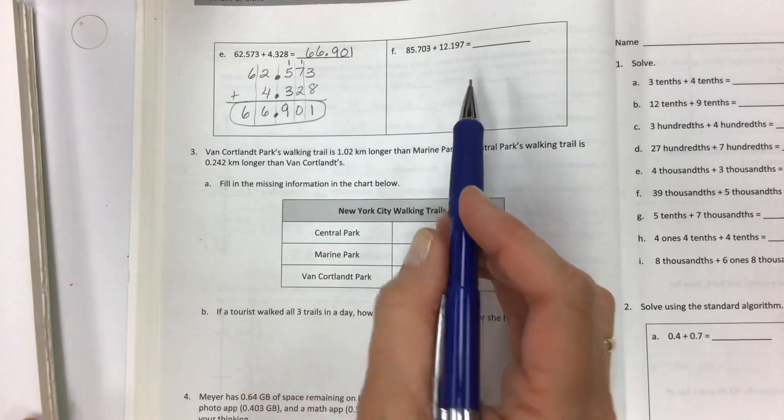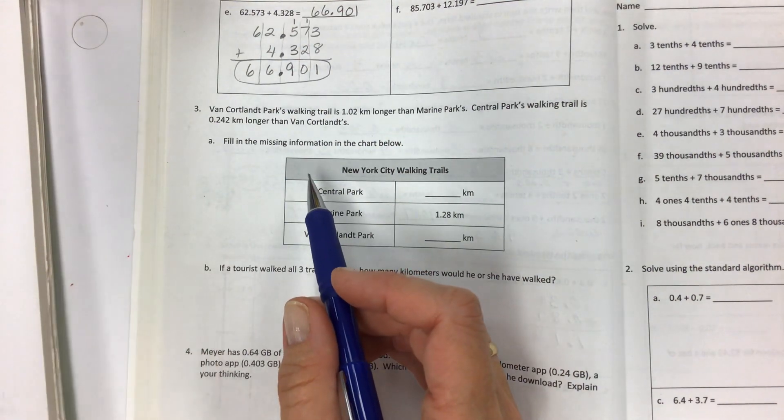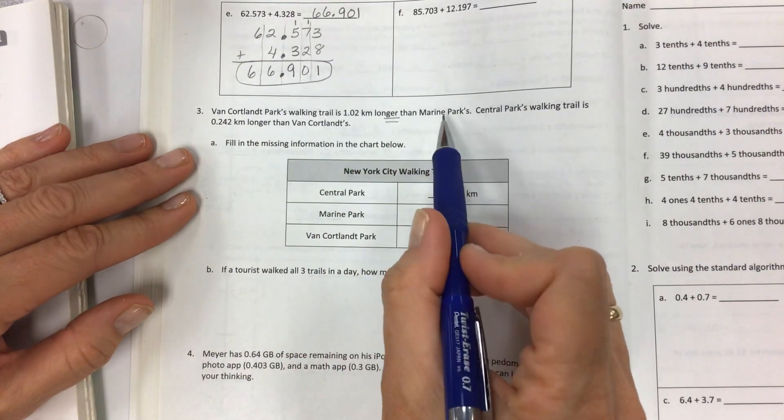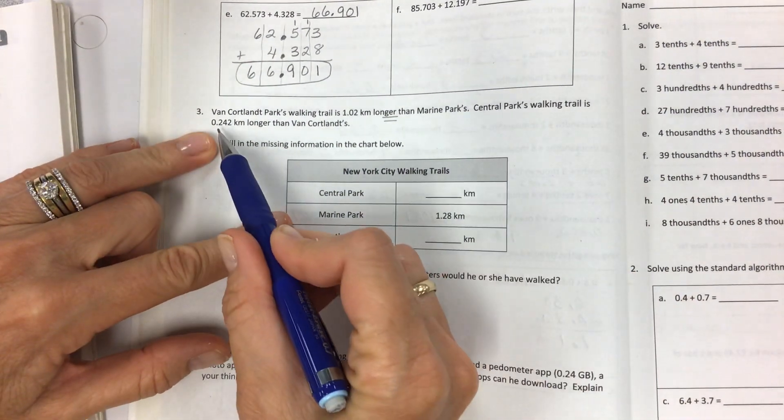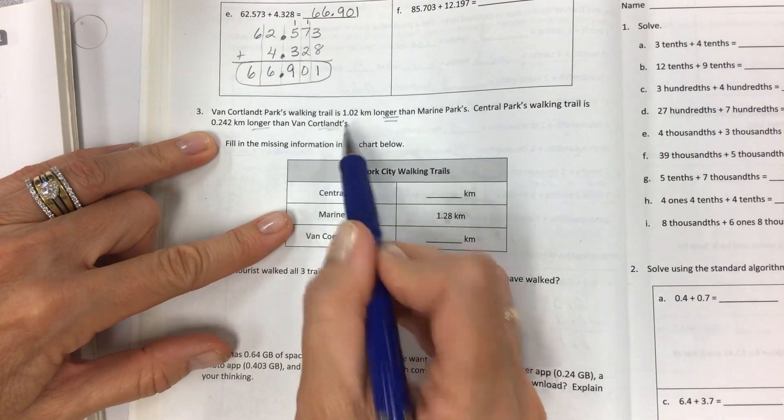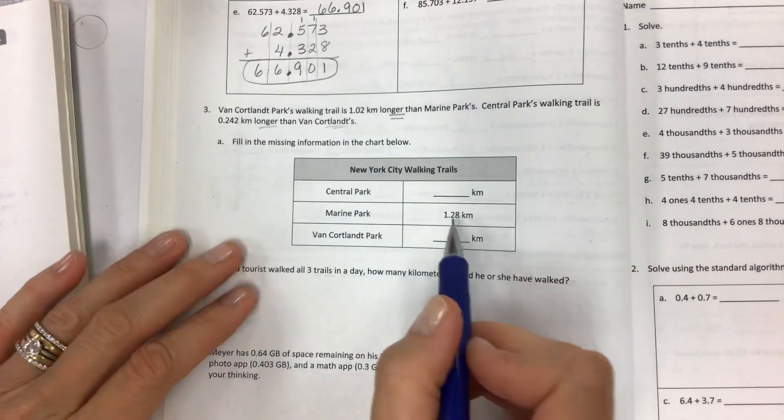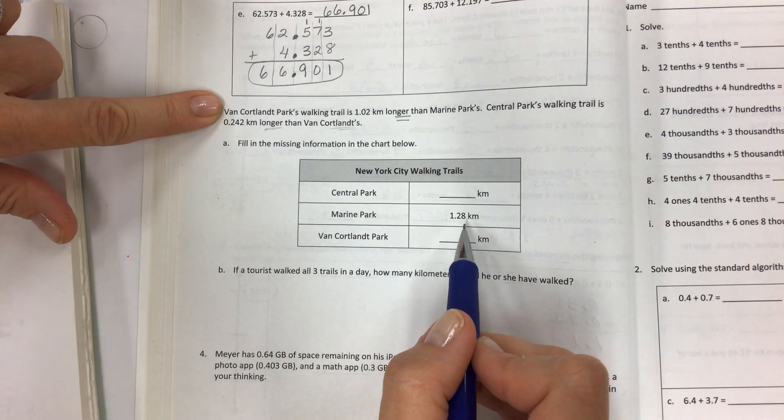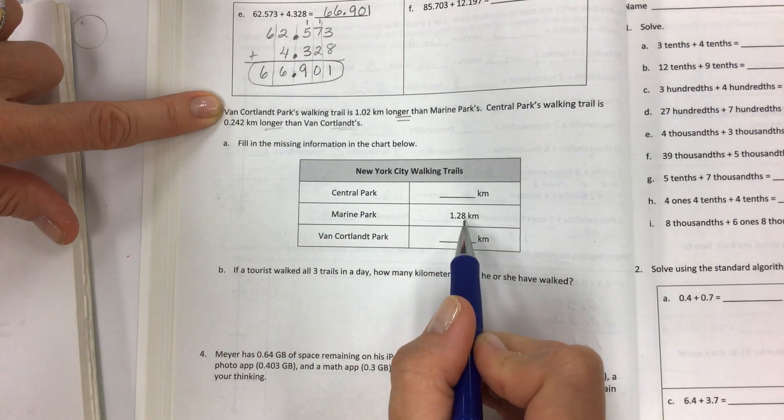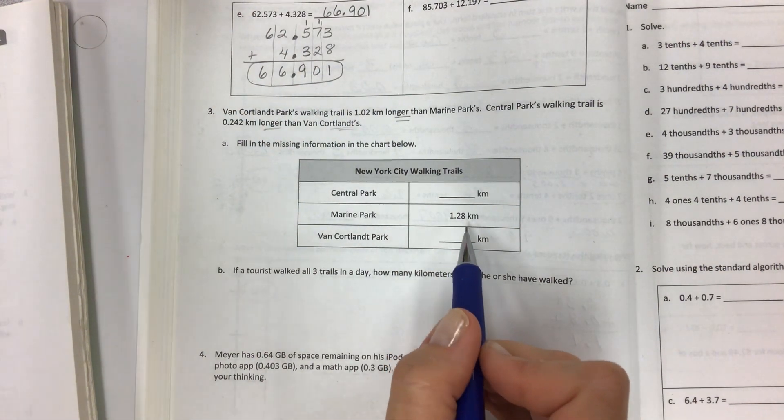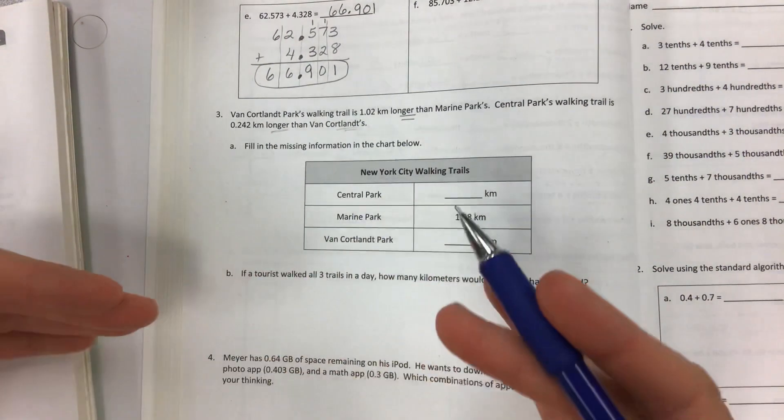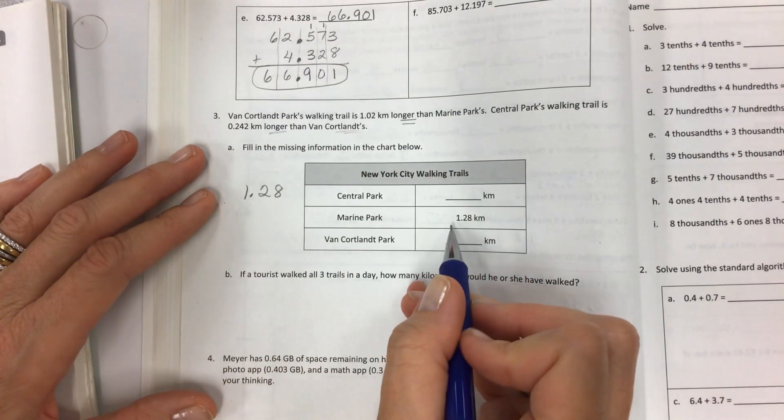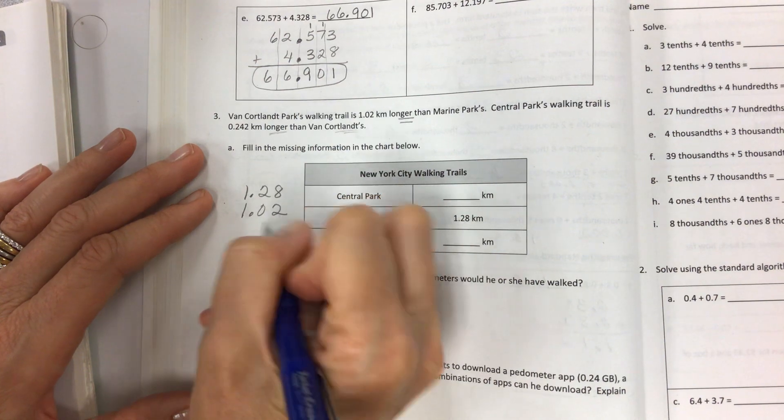Let's take a look at this word problem. Van Cortlandt Park's walking trail is 1.02 kilometers longer than Marine Park. Central Park's walking trail is 0.242 kilometers longer than Van Cortlandt's. Fill in the missing information. When they give you something to compare with, we're going to start with what they give us, which is Marine Park at 1.28 kilometers. If Van Cortlandt's is longer than this by this much, then we would use addition as our operation. We're not comparing it, we're adding to it. It's everything that Marine Park is and more.